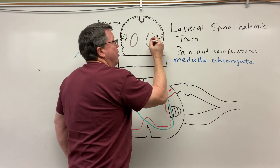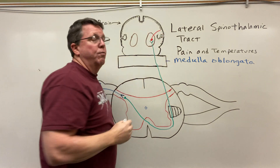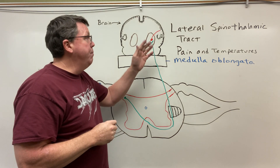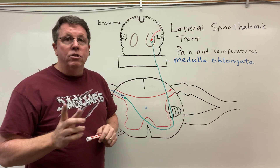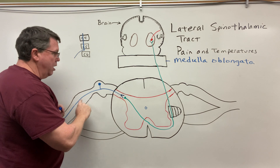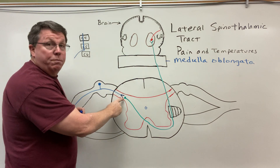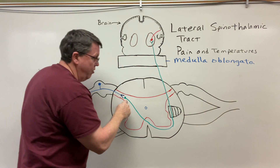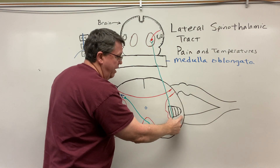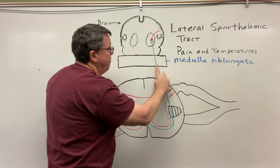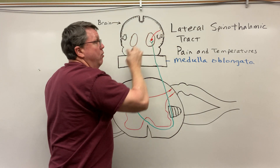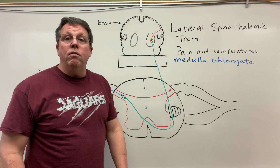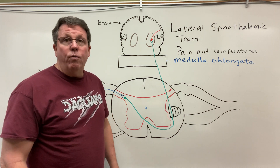So what's going to happen now is we synapse, and then this goes over to the primary somatosensory cortex, and from there the pain sensation will be felt. Just to reiterate: the pain sensation comes in, goes to the back of the spinal cord, travels up one to two levels, synapses, crosses over to the other side into the lateral spinothalamic tract, heads up to the thalamus, synapses, and then goes over to the primary somatosensory cortex. And that is your lateral spinothalamic tract — thank you very much for watching.